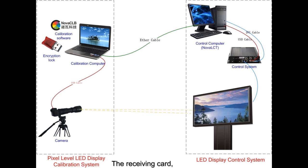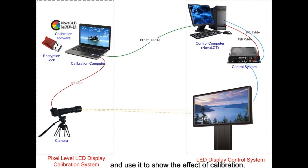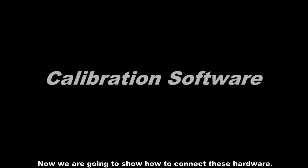The control computer sends the calibration coefficient to the receiving card. The receiving card, which is inside the LED display, saves the calibration coefficient and uses it to show the effect of calibration. Now we are going to show how to connect these hardware components.